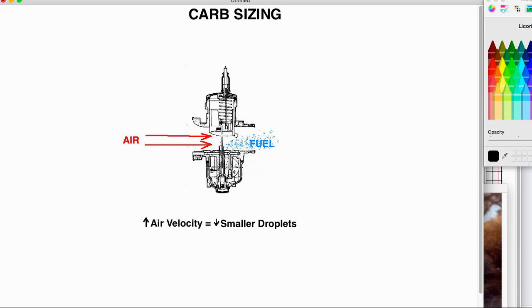Smaller carb, faster velocity. Bigger carb, slower velocity. And the velocity affects the fuel atomization, or breaking it up into the smaller sizes. So that's what is important right now, knowing that.